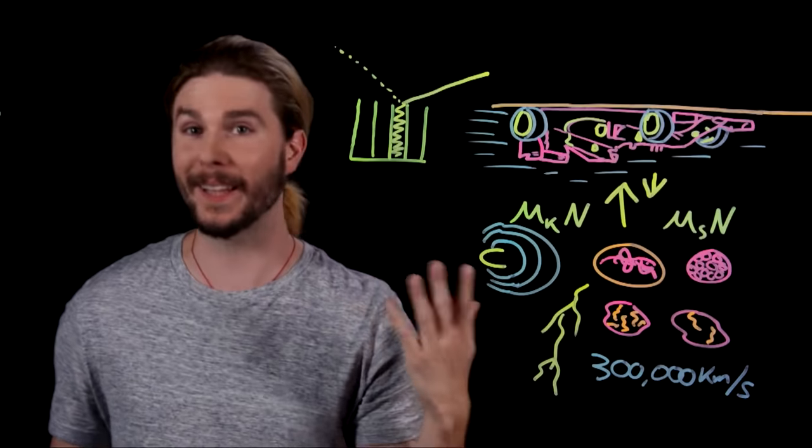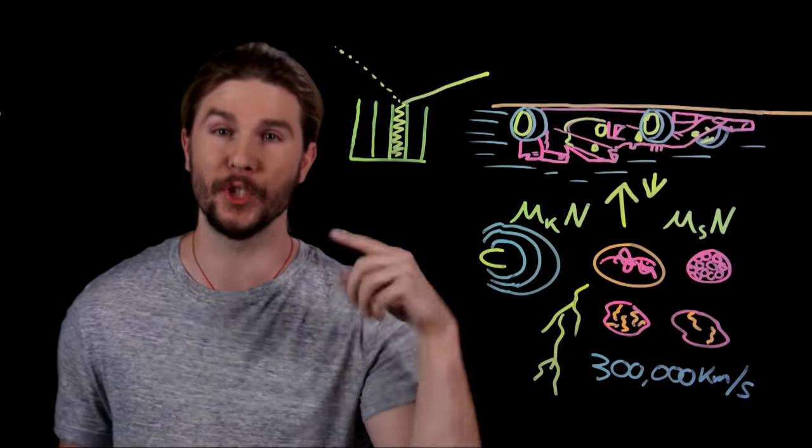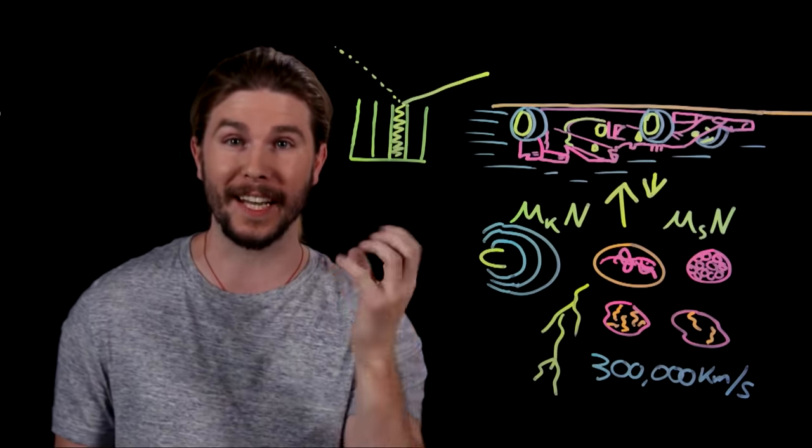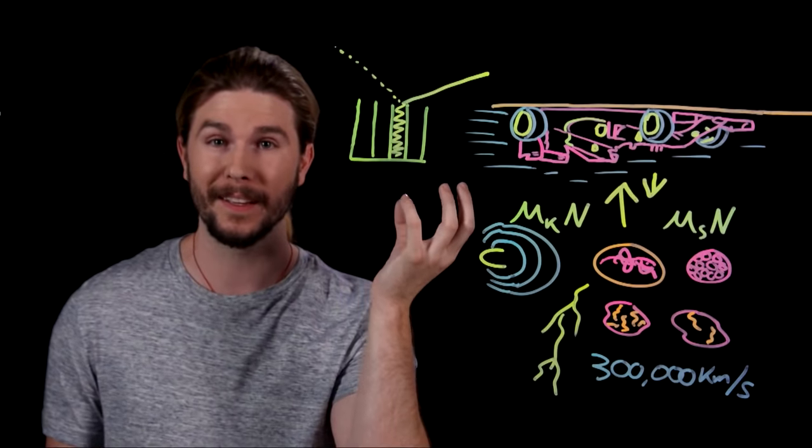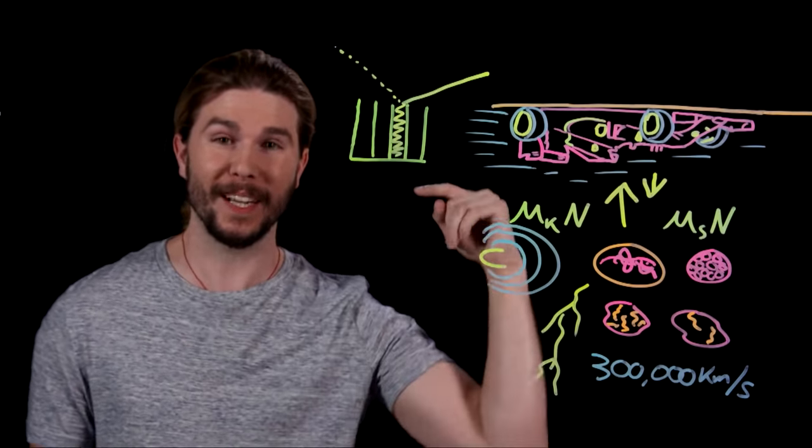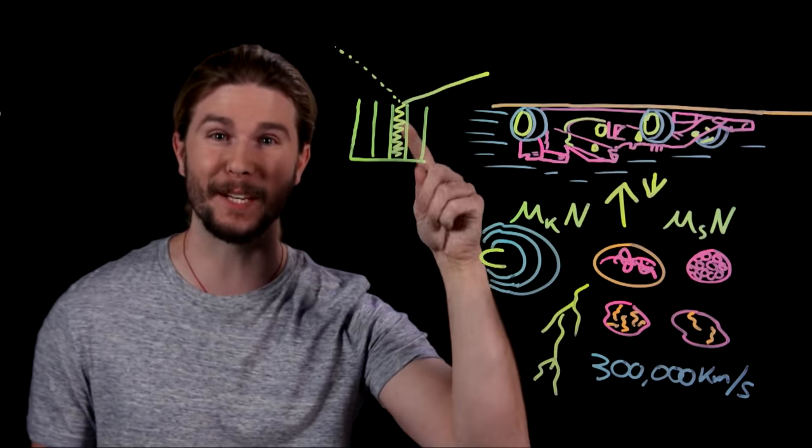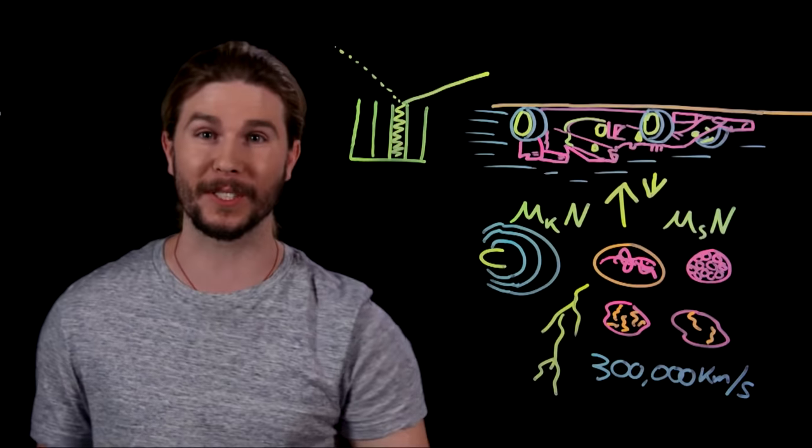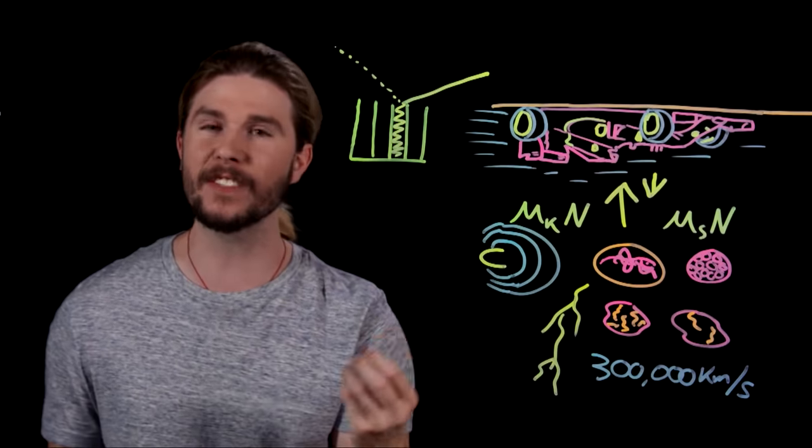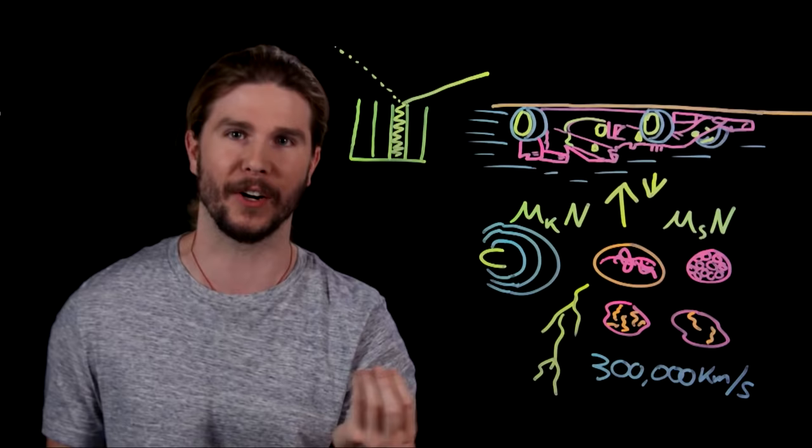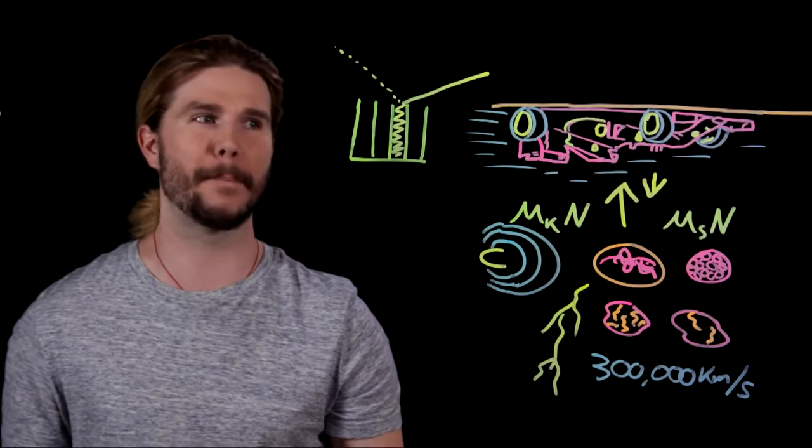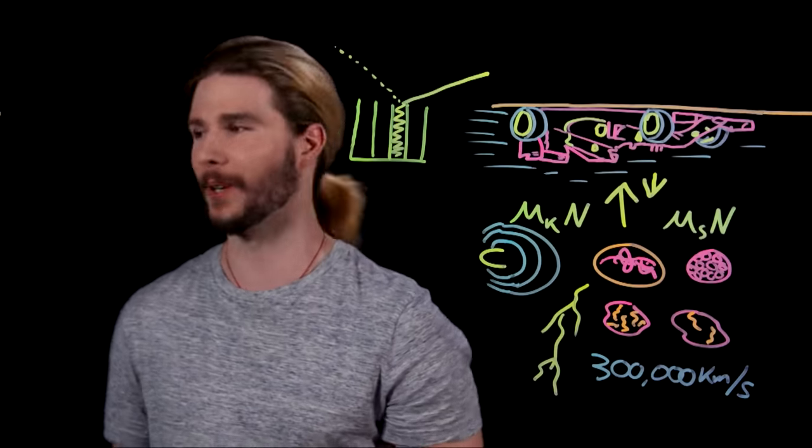That's why Vantablack absorbs 99.9978% of light or whatever. And the analogy to this, fellas, is in urinals, you know those little things at the bottom of urinals that have all the spokes popping up? The splash guards? It's because when you urinate into them, instead of splashing back out at you, it goes in and ricochets down in those spokes. So, Vantablack is the urinal splash guard of light technology. Put it on your website, Vantablack. What's next?